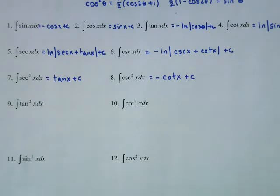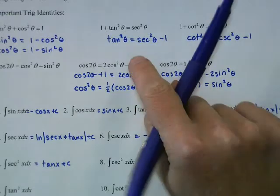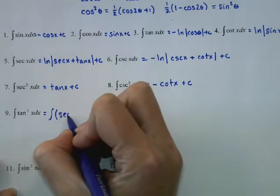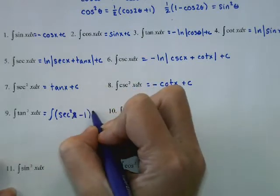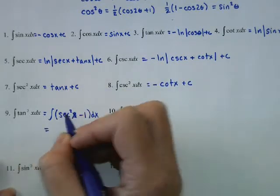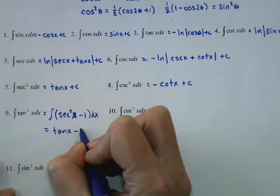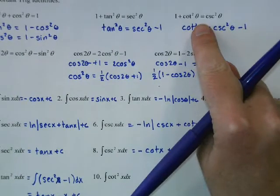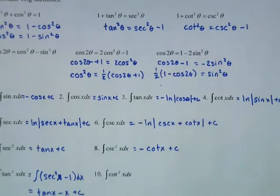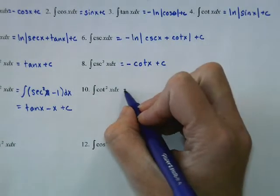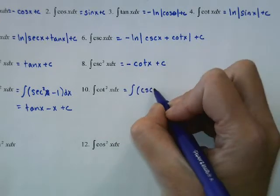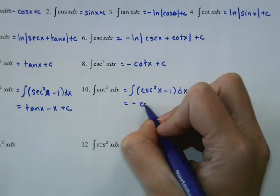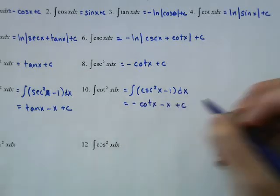For the integral of tangent squared, we can write tangent squared in terms of secant: replace tangent squared with secant squared minus 1. Then integrate: the integral of secant squared is tangent, and the integral of 1 is x. Similarly for cotangent squared, replace with cosecant squared minus 1, giving negative cotangent x minus x plus C.